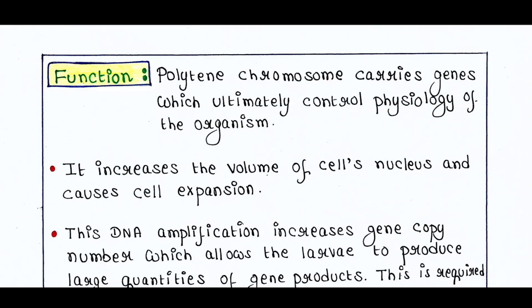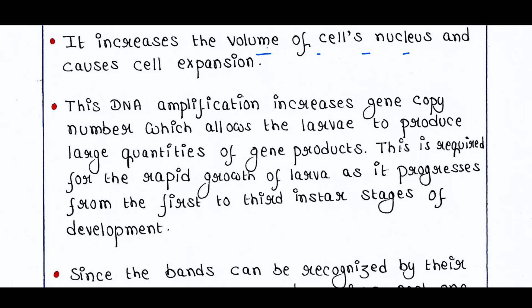Polytene chromosomes carry genes which ultimately control the physiology of the organism. They increase the volume of the cell's nucleus because of their large size, and cause cell expansion. This DNA amplification is important because it increases the gene copy number, which allows the larvae to produce large quantities of gene products — many genes means many proteins — and this is required for the rapid growth of larvae as it progresses from the 3rd to 4th instar stages of development.